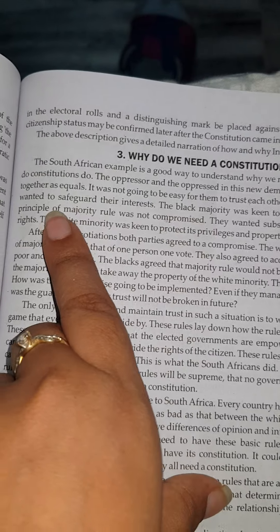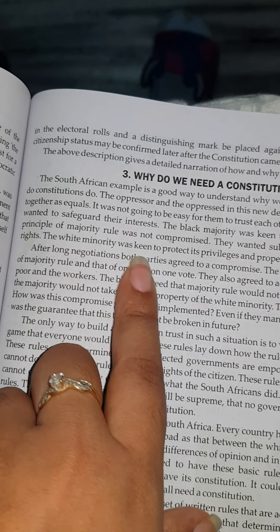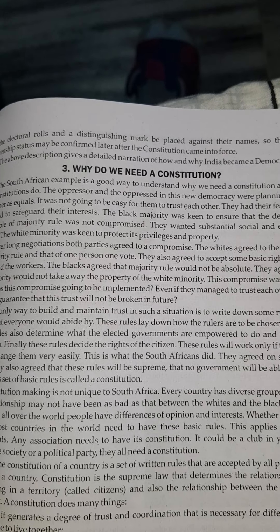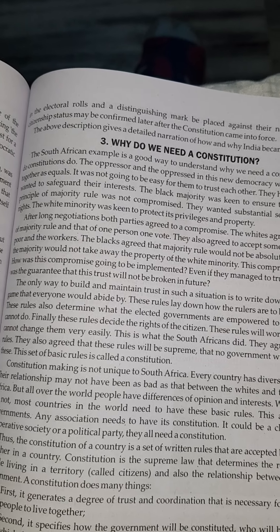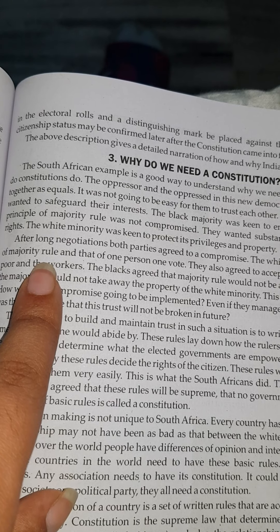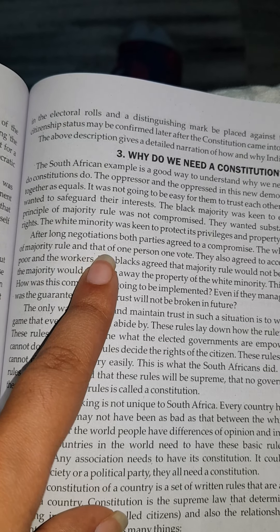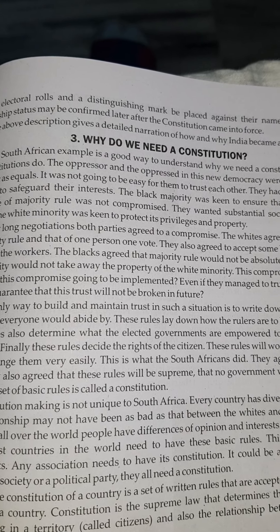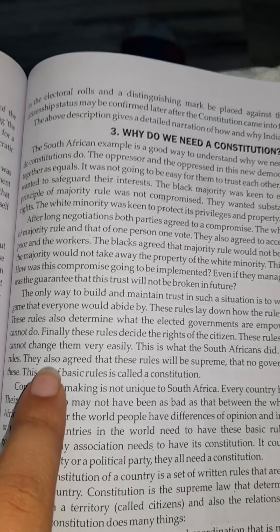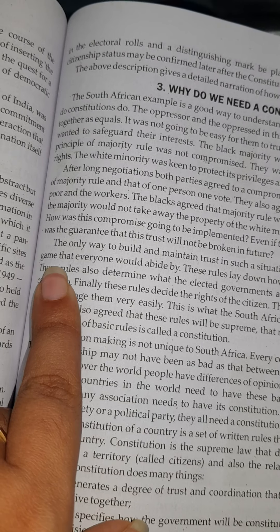The black majority was keen to ensure that democratic principles of majority rule were not compromised, and they wanted sufficient social and economic rights. The white minority were keen to protect their privileges and property. After long negotiations, both parties agreed to a compromise — that the majority should rule and each member of the country should get an equal voting right. The only way to bind and maintain trust in this situation was to write down some rules of the game that everyone should abide by.